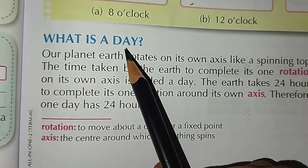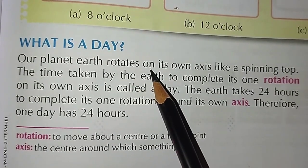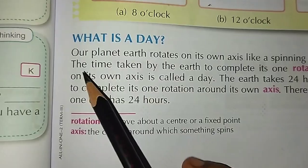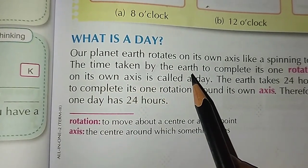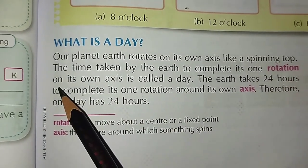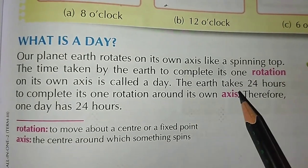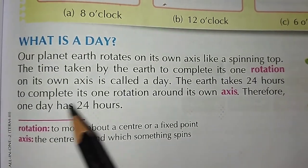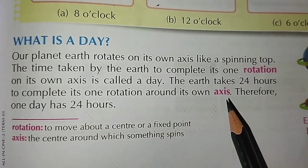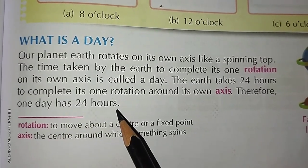What is a day? Our planet Earth rotates on its own axis like a spinning top. The time taken by the Earth to complete its one rotation on its own axis is called a day. The Earth takes 24 hours to complete its one rotation around its own axis. Therefore, one day has 24 hours.